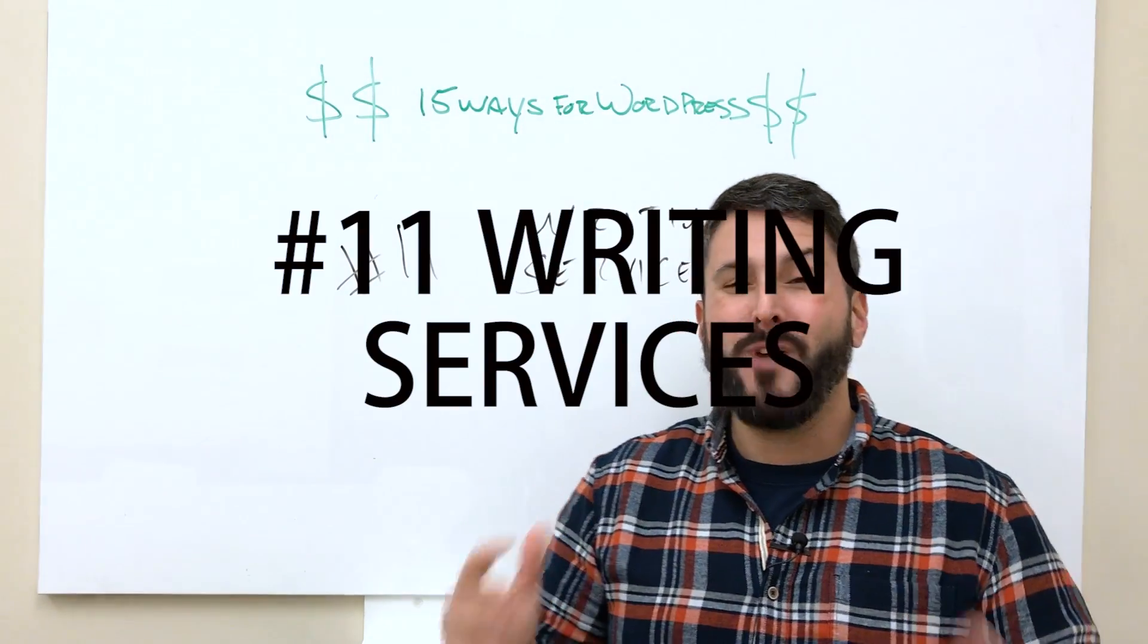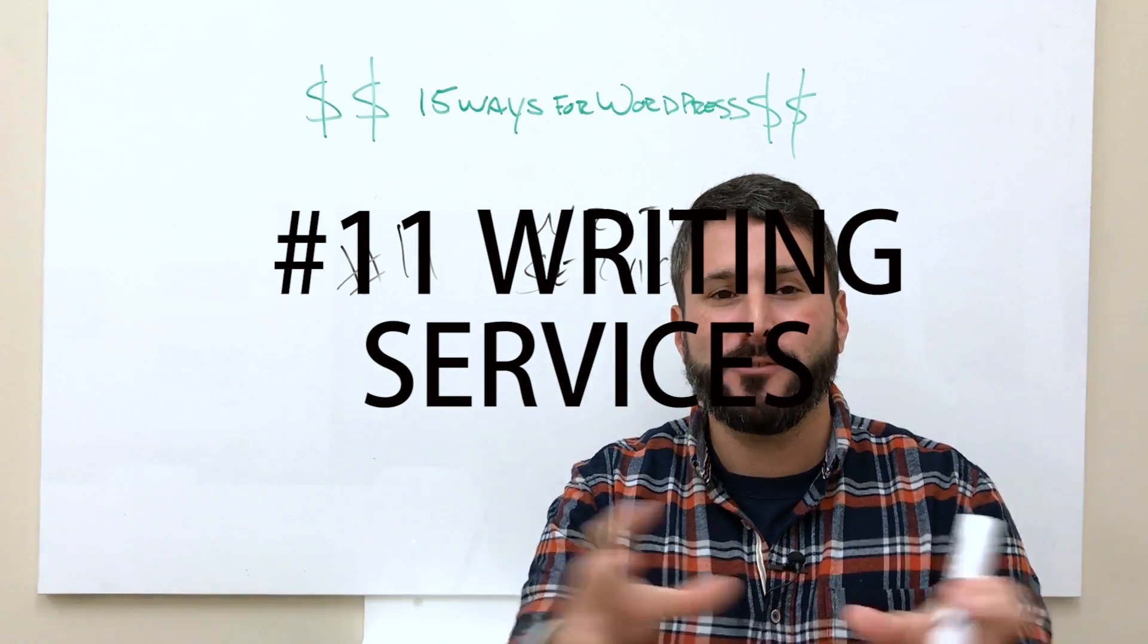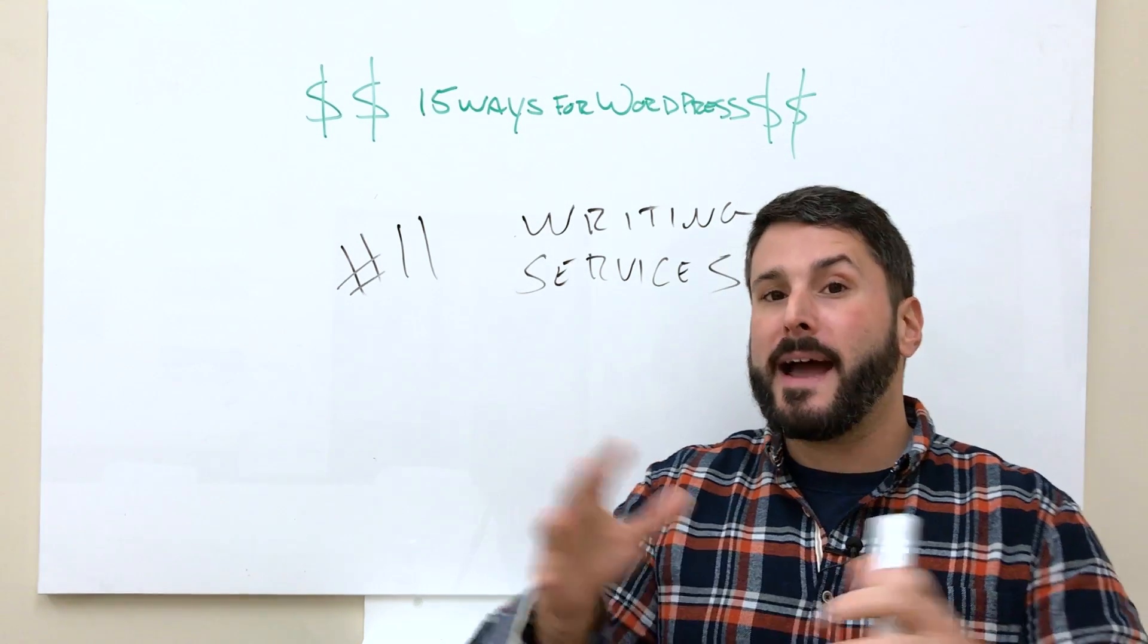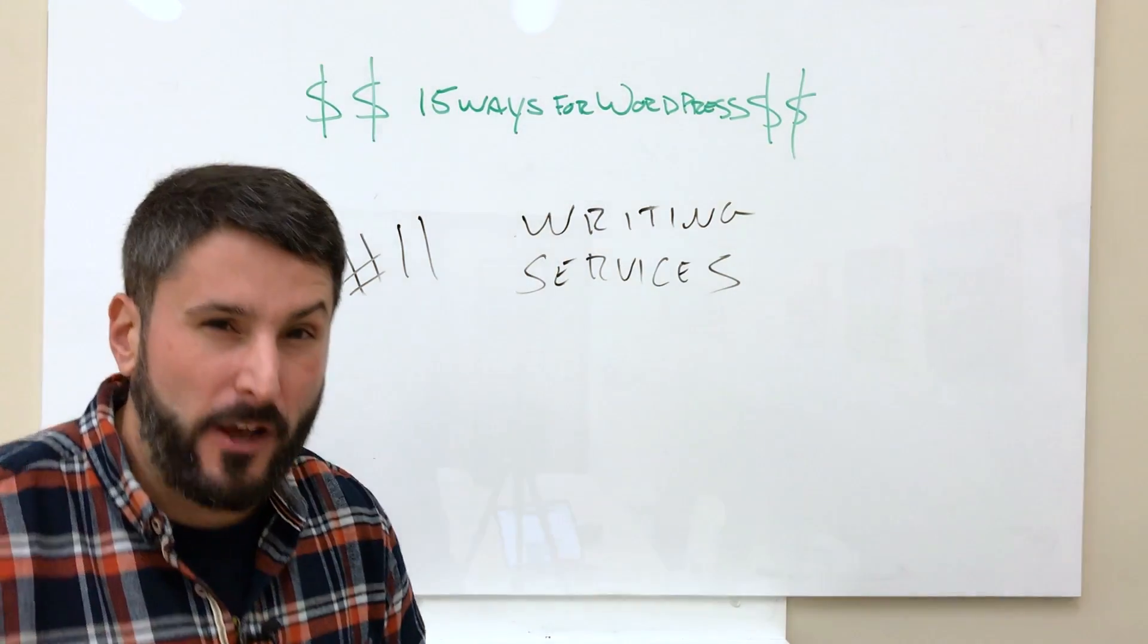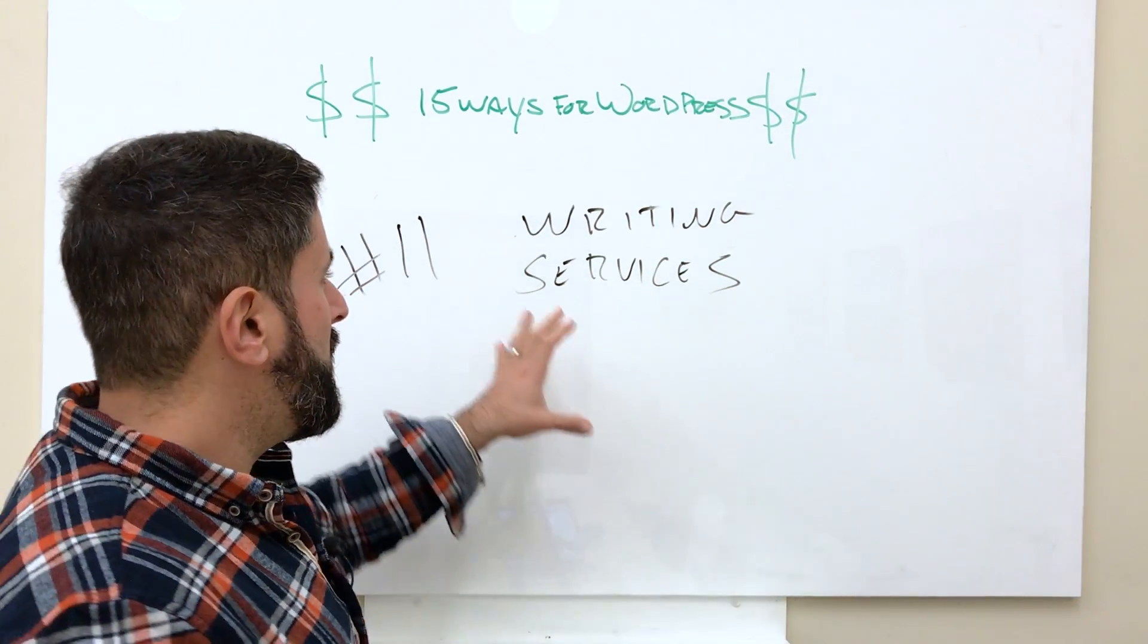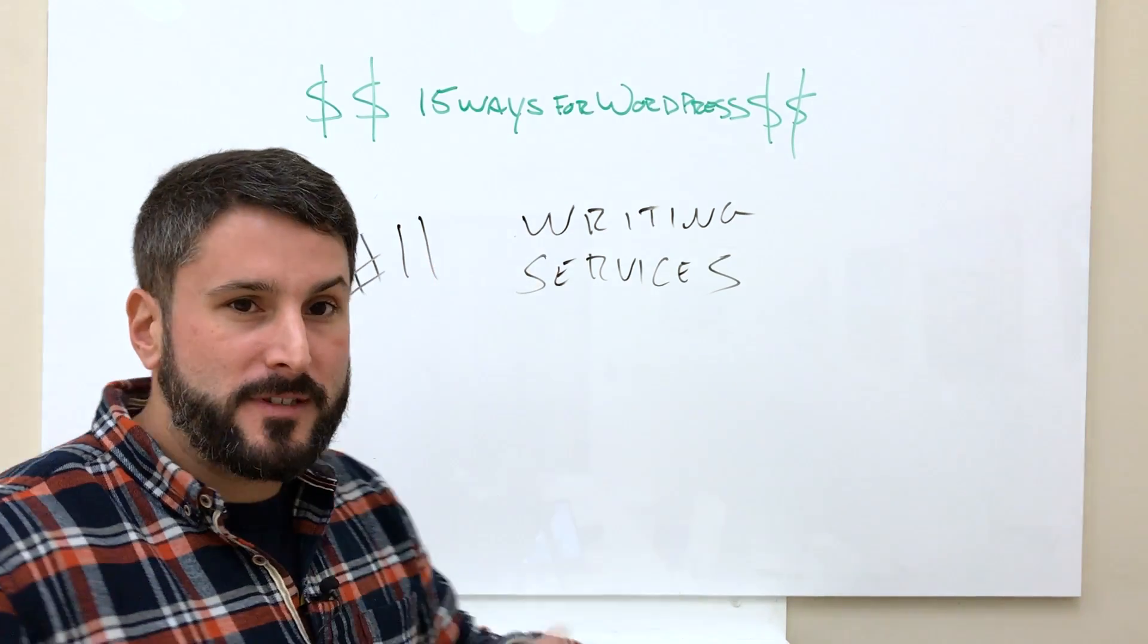Number 11, writing services. What happens when somebody gets a blog for their business? They need to write content. This is another huge sector for people who are not technically inclined. They don't have to be a designer or a developer. They don't need to learn how to do code. They just know how to write stuff. Ghost writers, content writers, content marketing, that kind of thing. Writing services is huge.